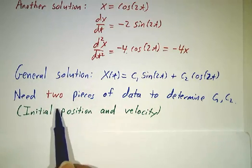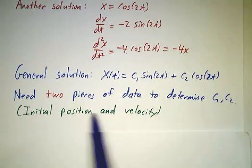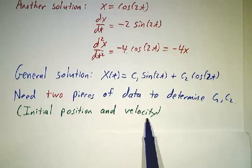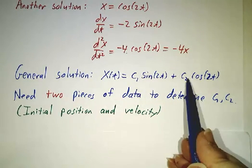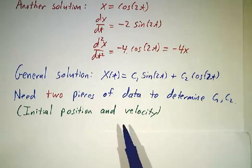It's not enough to say what the initial position of the block is. You have to give the initial position of the block and the initial velocity of the block. Once you do that, you can figure out what c1 and c2 are. Once you do that, you know where the block will be for all time.